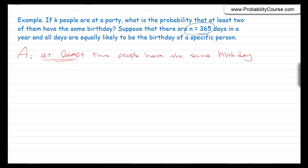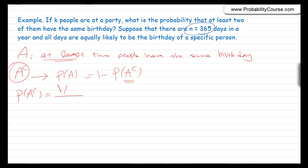The word 'at least' suggests it's sometimes easier to look at the complement. We write: P(A) = 1 − P(A complement). The complement is the event that no two people have the same birthday. In this case, it's easier to find the probability of A complement. We can write P(A complement) = |A complement| / |S|, since this is an equally likely sample space where all birthdays are equally likely.